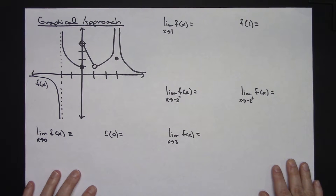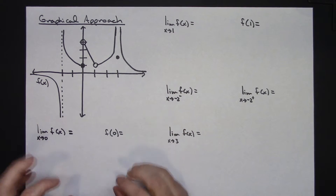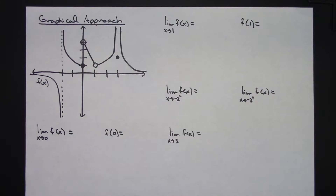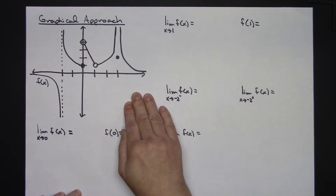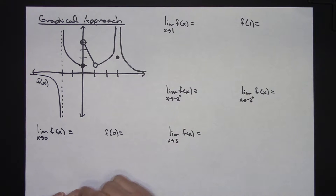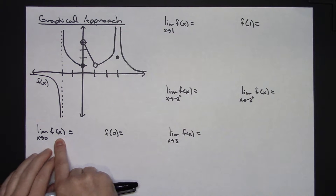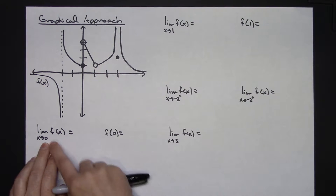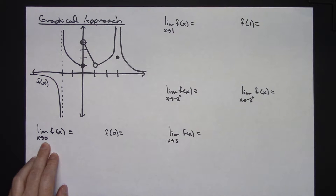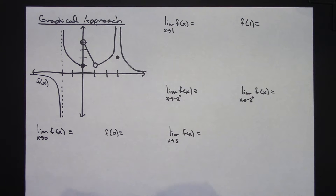Now let's take a look at a graphical approach. You can be given some random graph or put a function in your graphing calculator. Let's say I've got some weird-looking function called f of x. I want to find the limit as x approaches 0 of f of x. There's no plus or minus, so I'm not doing a one-sided limit — I have to check it from the left and from the right and see if those two values are equal.